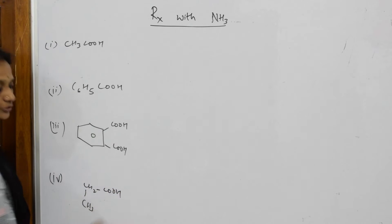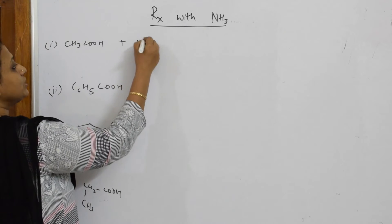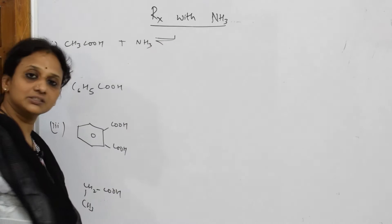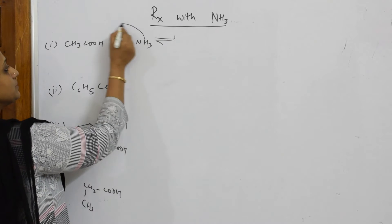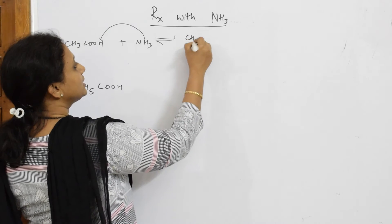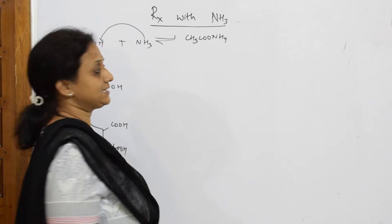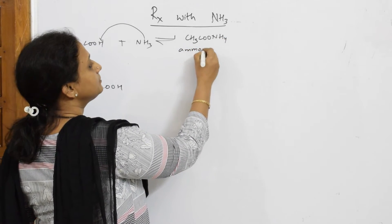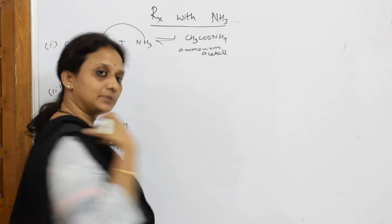For example, take propanoic acid. Whenever you see ammonia addition to a carboxylic acid, first write that these are reversible reactions. You should form an ammonium salt — ammonia goes and adds to the acid. What do you get? You get ammonium acetate, which is a salt.